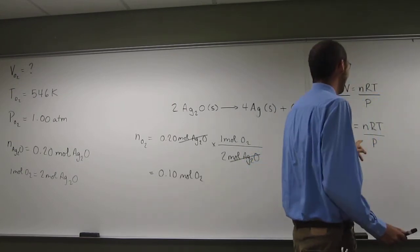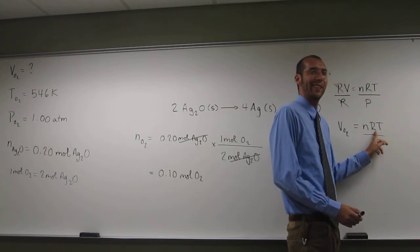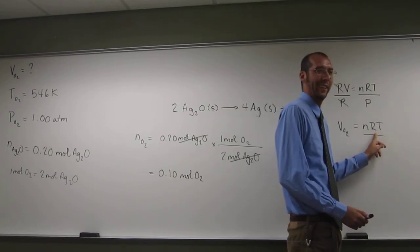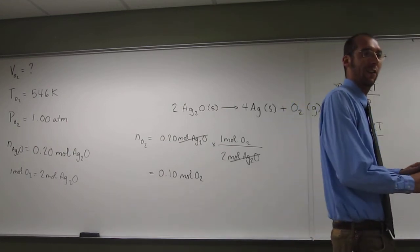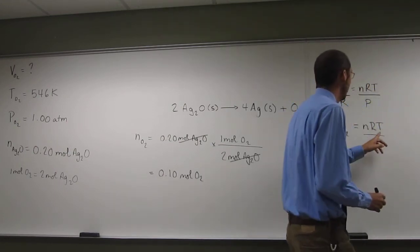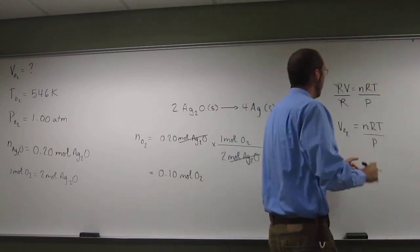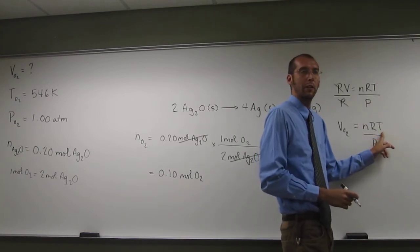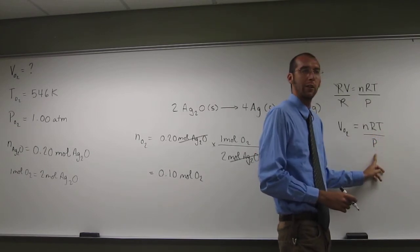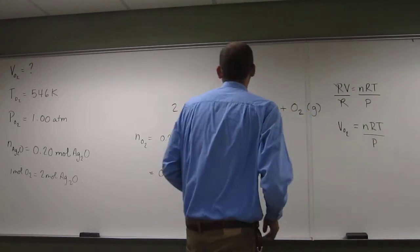In order to find the volume of oxygen, we're going to have to know the number of moles of oxygen. Do we know that? Yes, right? And the gas constant is 0.0821. Do we know the temperature of oxygen? Yes. And do we know the pressure of oxygen? So, we should be able to find out the volume of oxygen.